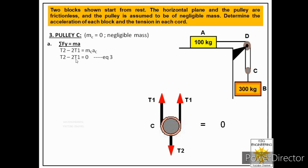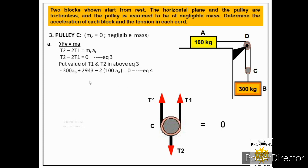We already have expressions for T1 and T2 from the free body analyses of block A and block B. Substituting those values into the equation T2 − 2T1 = 0 gives: (−300·aB + 2943) − 2·(100·aA) = 0.